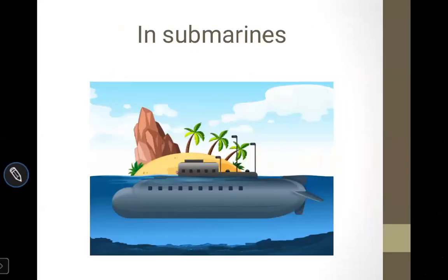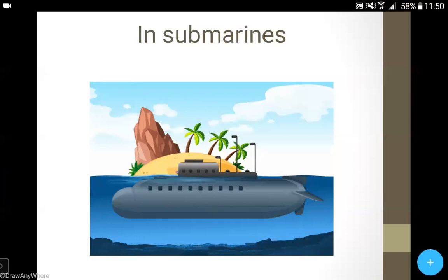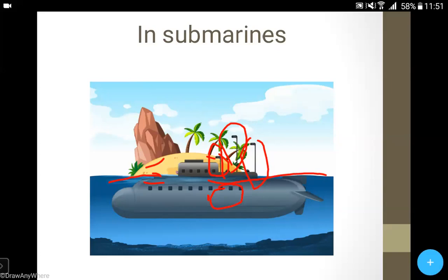Periscopes are used in submarines. These submarines are under the water. If you can see the periscope outside, you can only see through the periscope. The light source reflects, and the persons inside the submarines sit and observe. If there is no object or any plane coming in the direction of the periscope outside, there is no mountain or tree. So that periscope helps in the submarine.